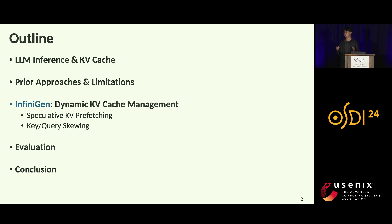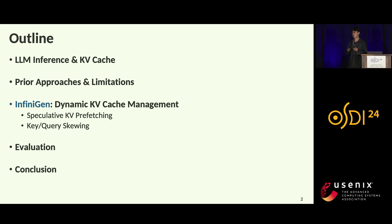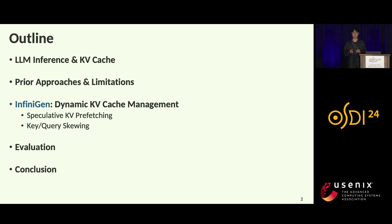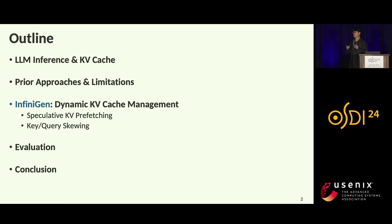This is the outline of today's talk. First, I'll explain LLM inference and the KV cache problem, and talk about prior approaches to reduce the size of key-value cache and their limitations. Then I'll introduce InfiniGEN, a dynamic KV cache management framework with two key components: speculative key-value prefetching and a key-query screen. Finally, I'll show the evaluation results and conclude.